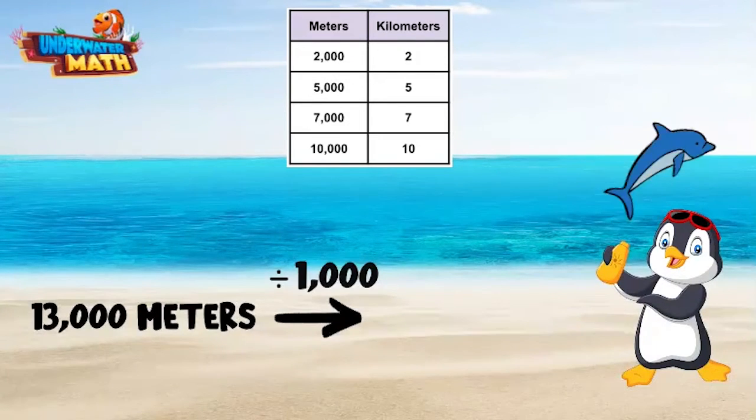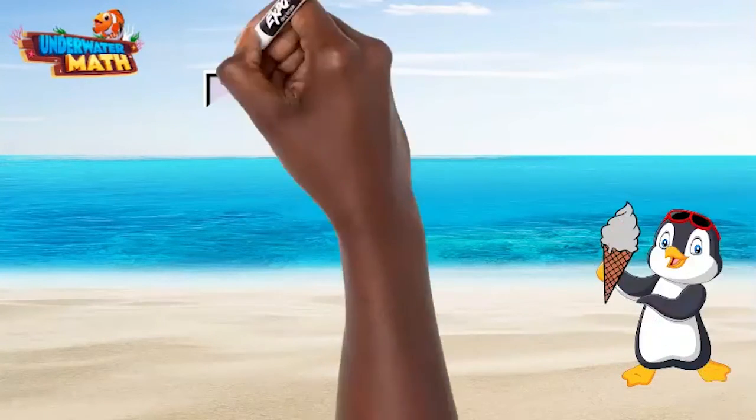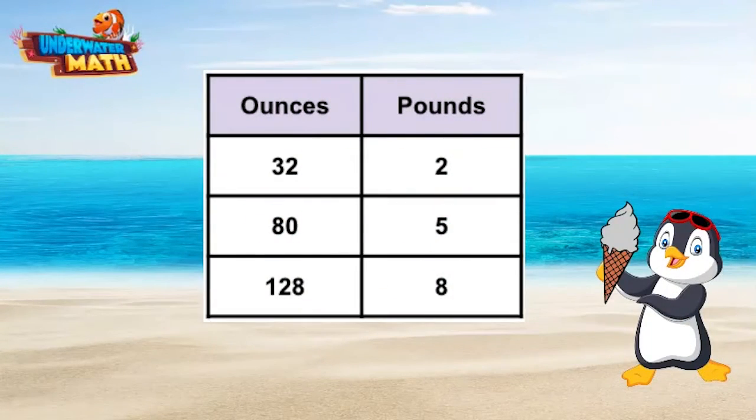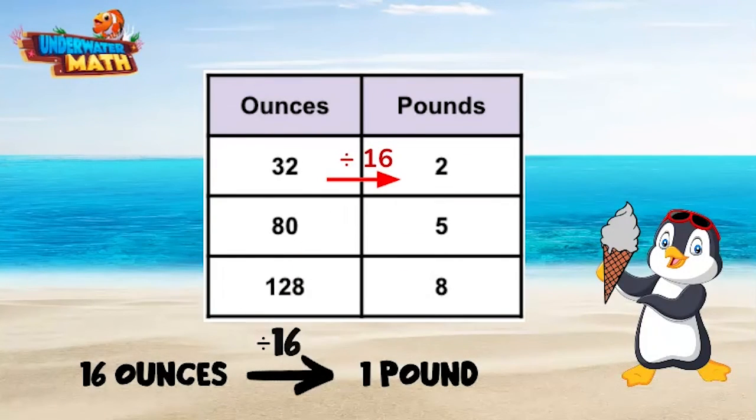I decided to go for an ice cream and ordered 16 ounces of vanilla. How many pounds of ice cream did I order? As we move from ounces to pounds, we divide by 16. 16 divided by 16 is 1. I had one pound of ice cream.